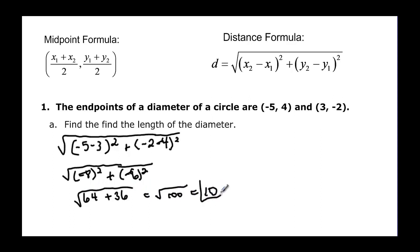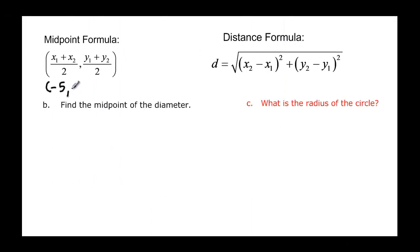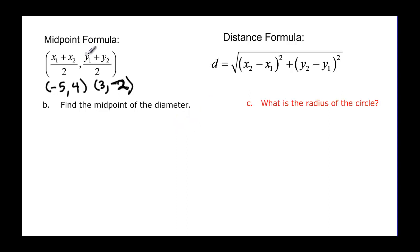So the diameter of that circle would be ten. Now we want to find the midpoint of the points negative five, four and three, negative two. For the midpoint, remember that you're going to add the x's and the y's to find the ordered pair.